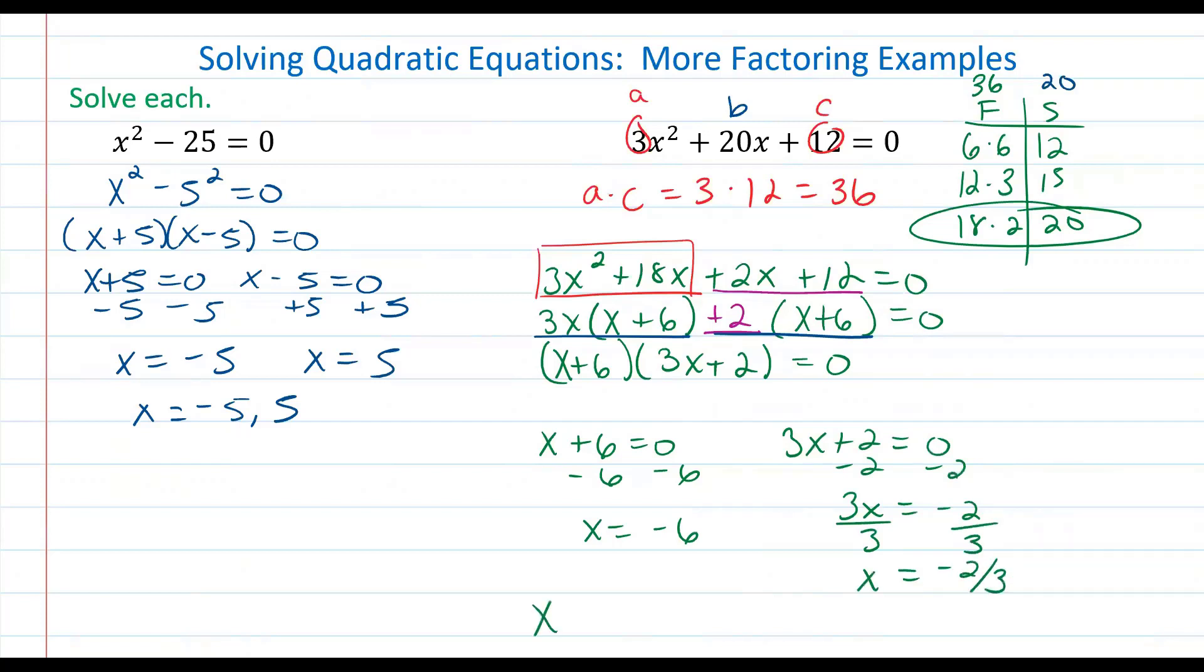Again I like writing it as a list so it's going to be x equals negative 6 and negative 2 thirds. All right guys good luck.